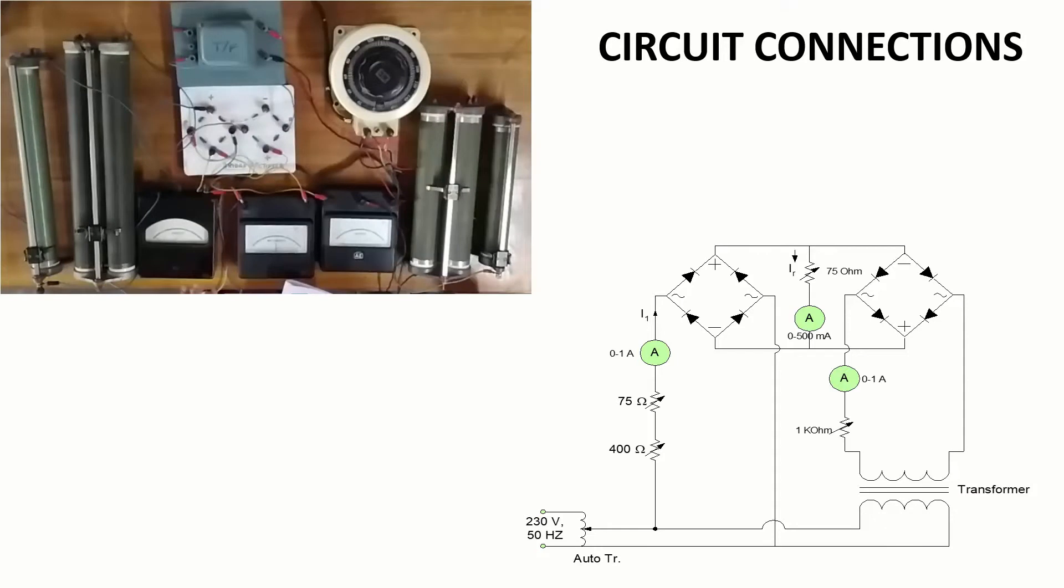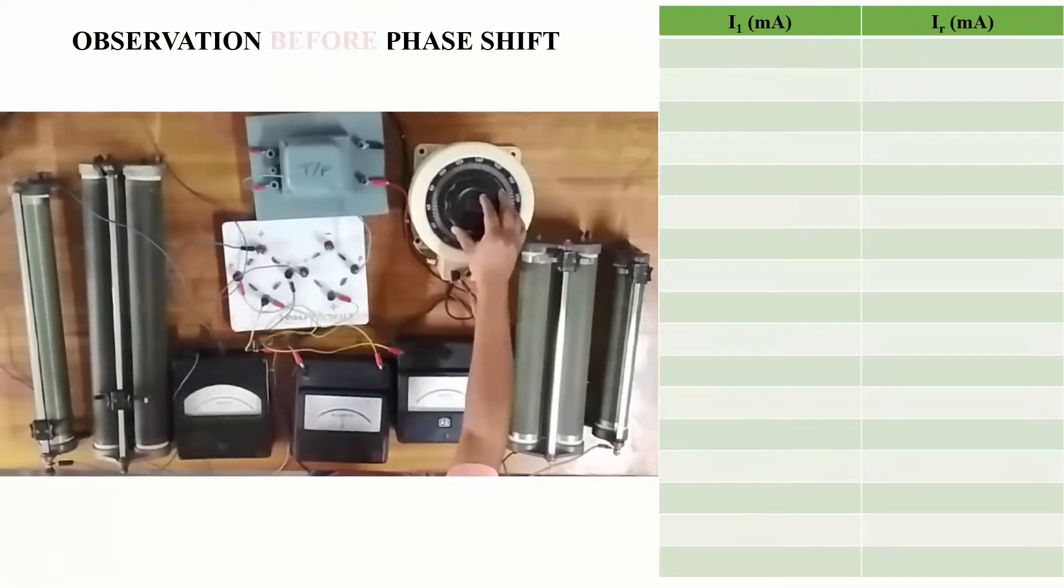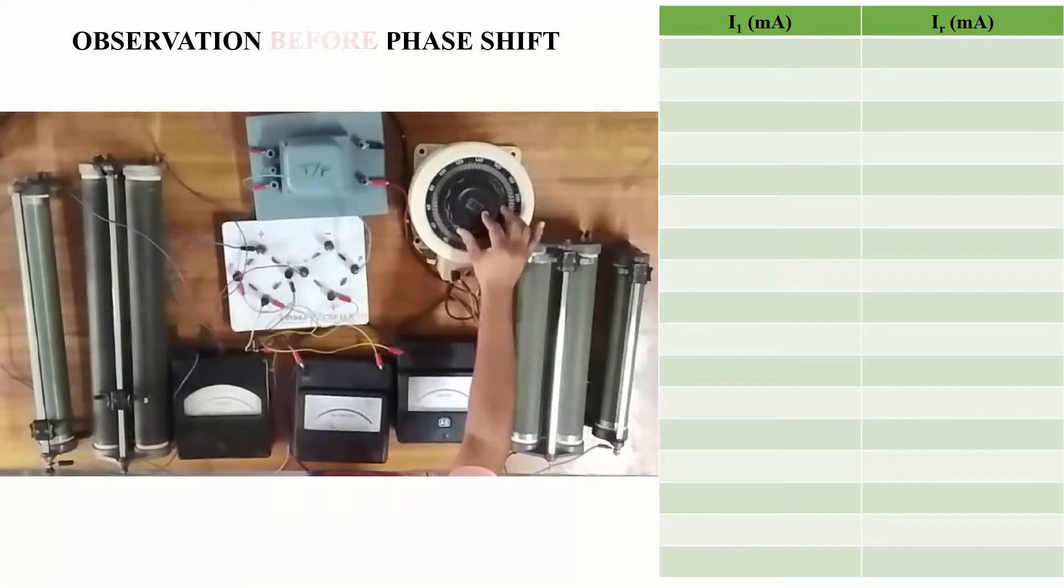Shown here is the circuit which is connected using the circuit diagram. Now we'll perform the experiment before shifting the phase. We'll first keep I2 fixed at a steady value, which will be around 150 milliampere. Now we'll start varying current I1 and observe current IR. This is our first set of readings.